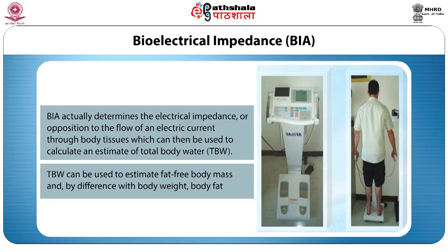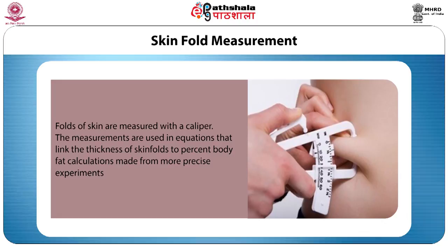Next is bioelectrical impedance. It determines the electrical impedance or opposition to the flow of an electric current through body tissues, which can then be used to calculate an estimate of total body water (TBW). The TBW can be used to estimate fat-free body mass and, by difference with body weight, body fat. Next, we can study anthropometry methods. The first one is skinfold measurement — a caliper is used to measure the folds of skin. The measurements are used in equations that link the thickness of skin folds to percent body fat calculations made from more precise experiments.